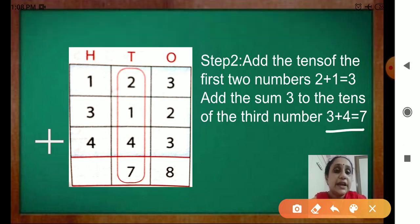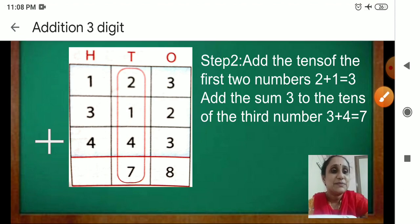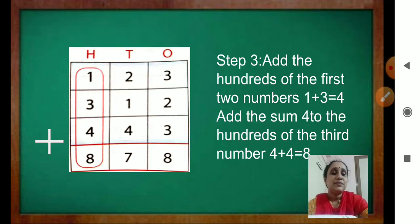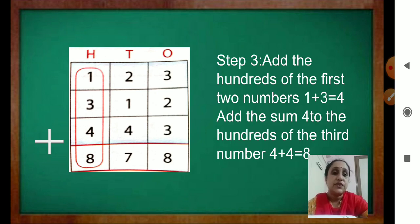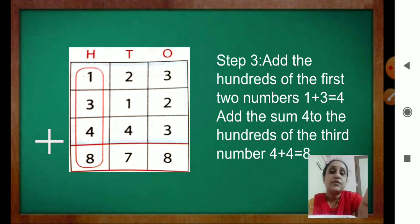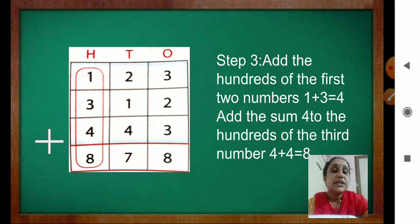So, we finish first adding the 1s place, then the 10s place. Now we will add the 100s place. Step 3: add the 100s of the first 2 numbers. That is 1 plus 3 — how much? 4. And that 4 will be added to this 4. So, 4 plus 4 is 8. The answer is 878.